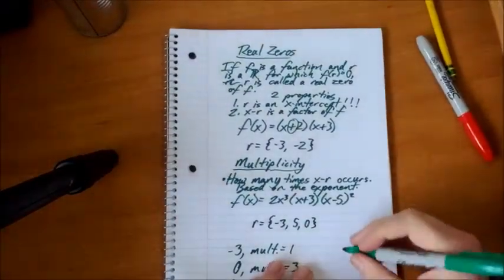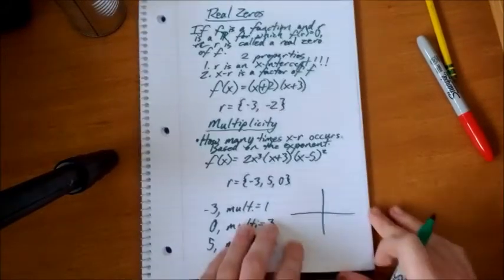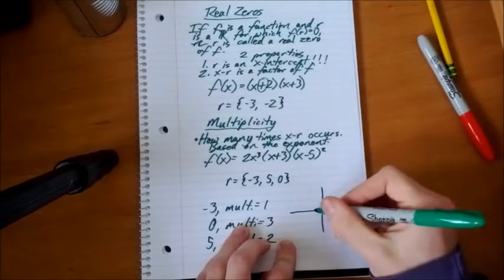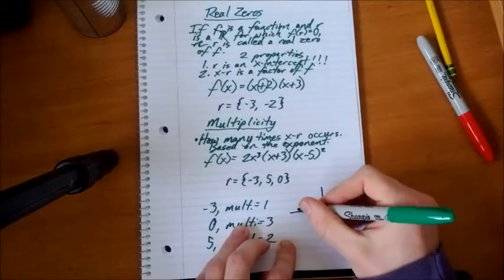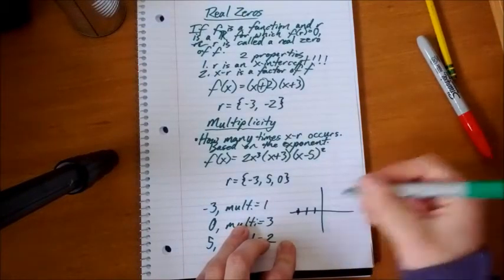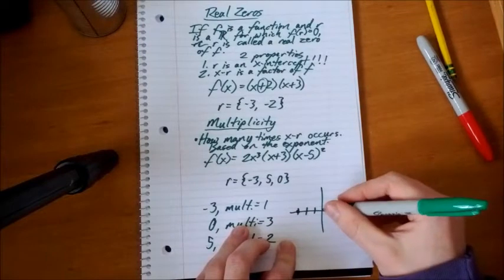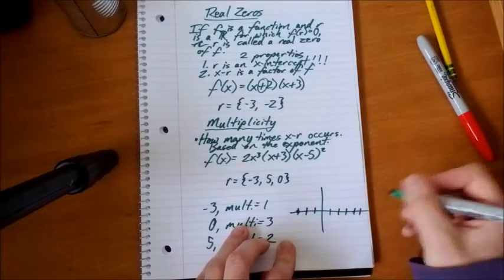So let's go back to this example here. We have this graph. We have our real zeros, our x-intercepts. So we have one at negative three. One, two, three. Here is one x-intercept. And then we have one at five. One, two, three, four, five.